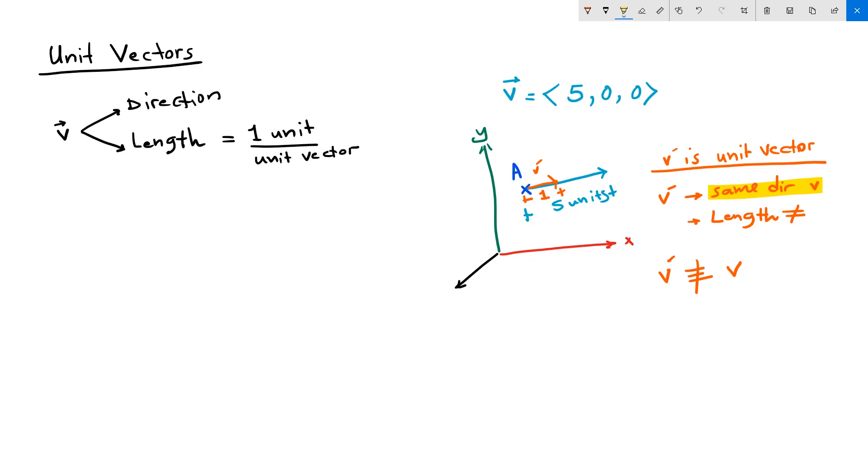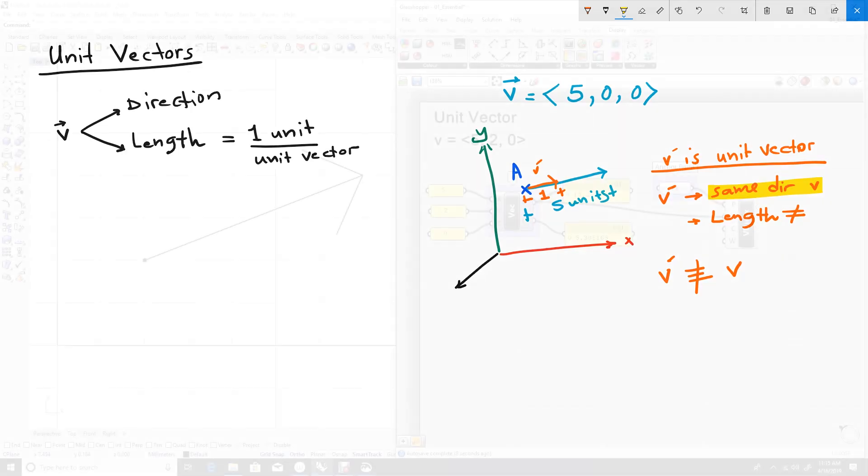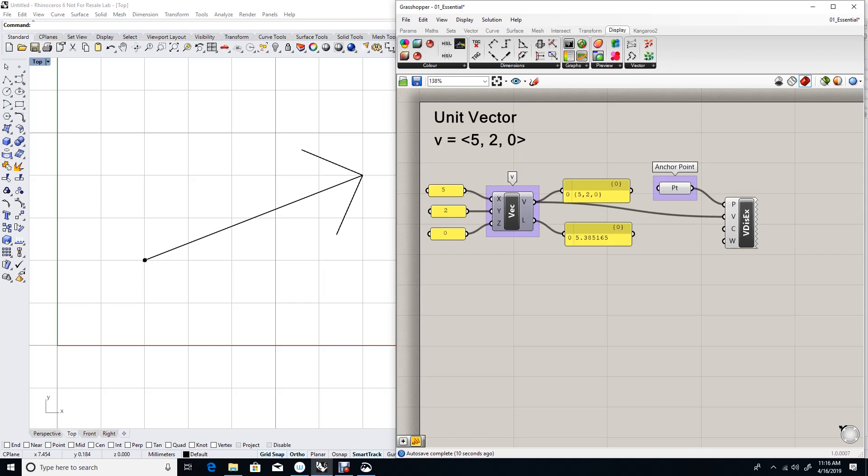Let's create and visualize a unit vector in Grasshopper. Given a vector V, 5, 2, 0, we can anchor it to any point in space and be able to represent that vector. Now suppose I want to create a vector that goes in the same direction as vector V but has a length of exactly one unit. How do I do that?